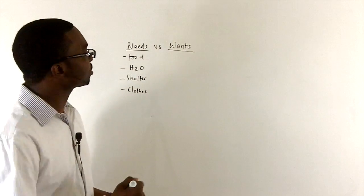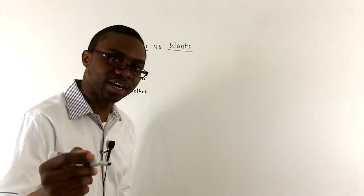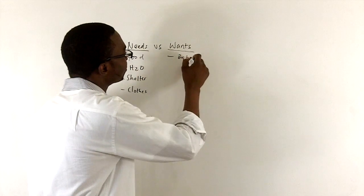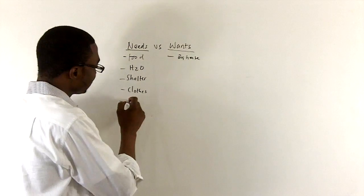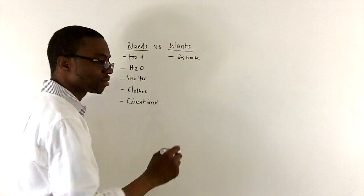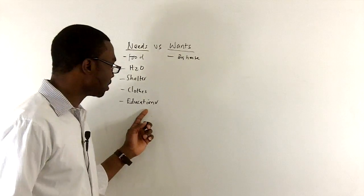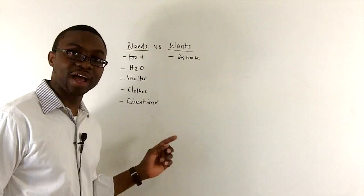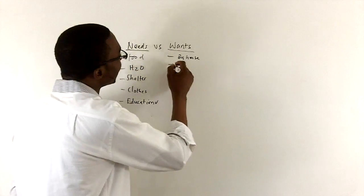Now, let's look at things that people want. The list goes on forever. People want a big house. Actually, before we move to wants, education is a need. Because the more educated you are, the more you can make better decisions, the better you can get a better job. The more you can be able to sustain your family with your financial income.